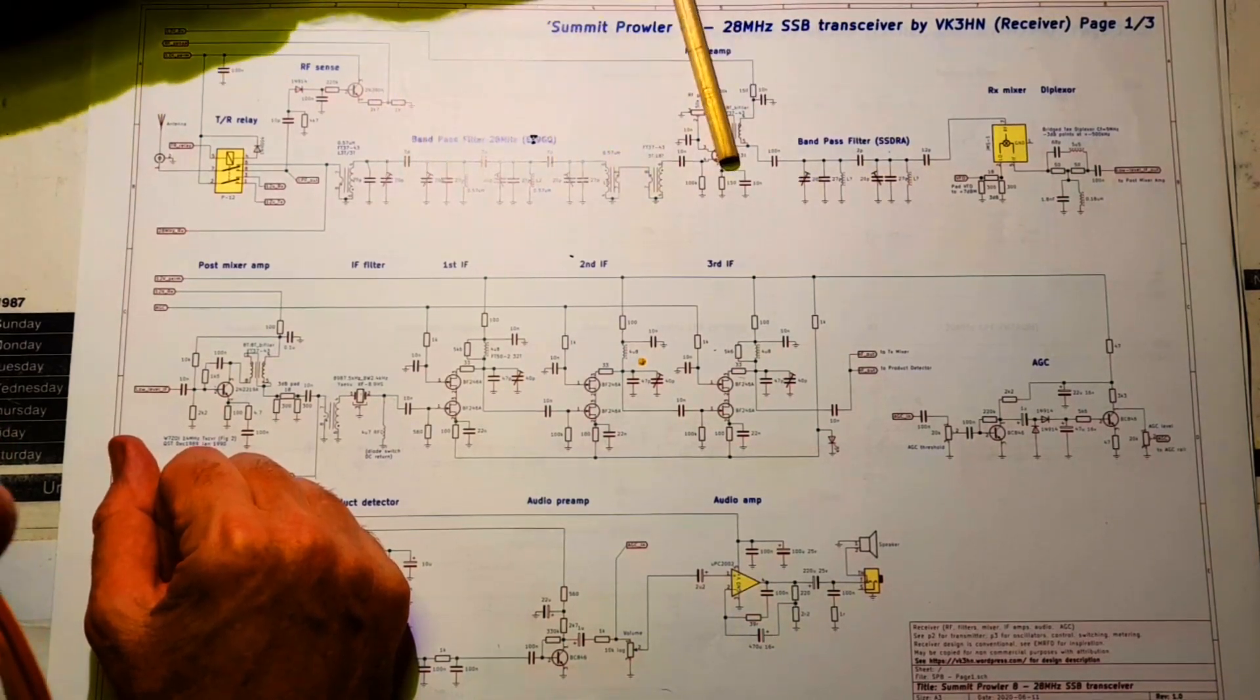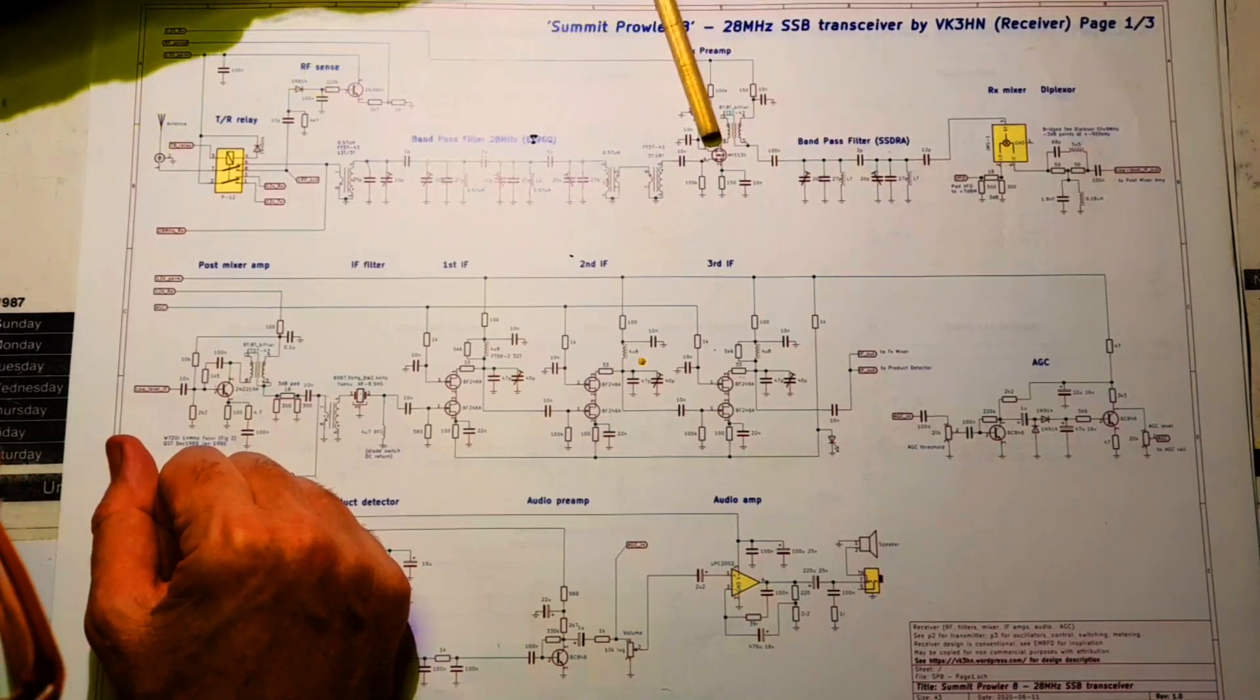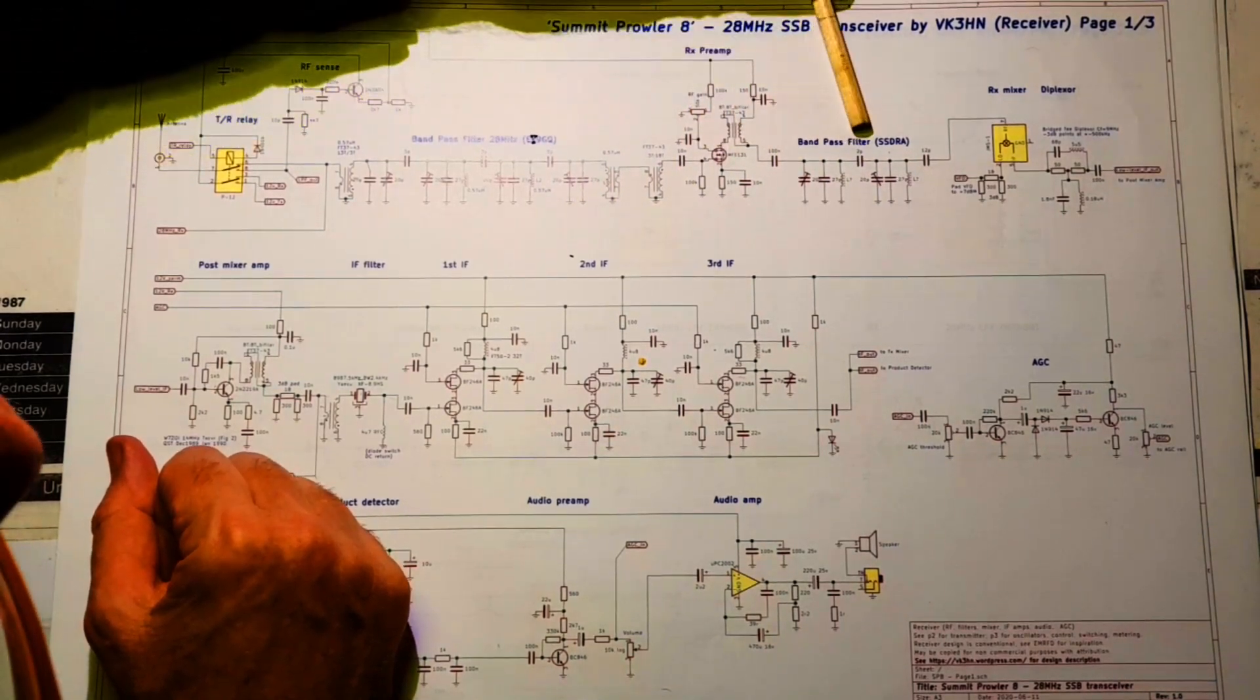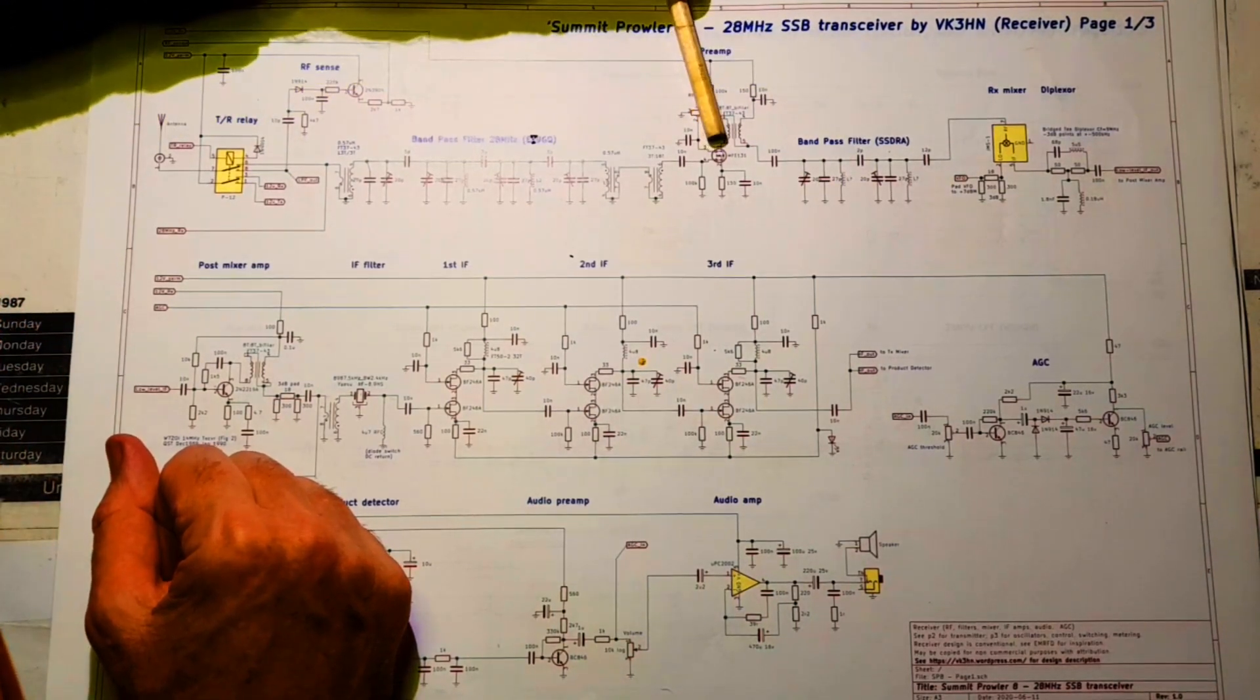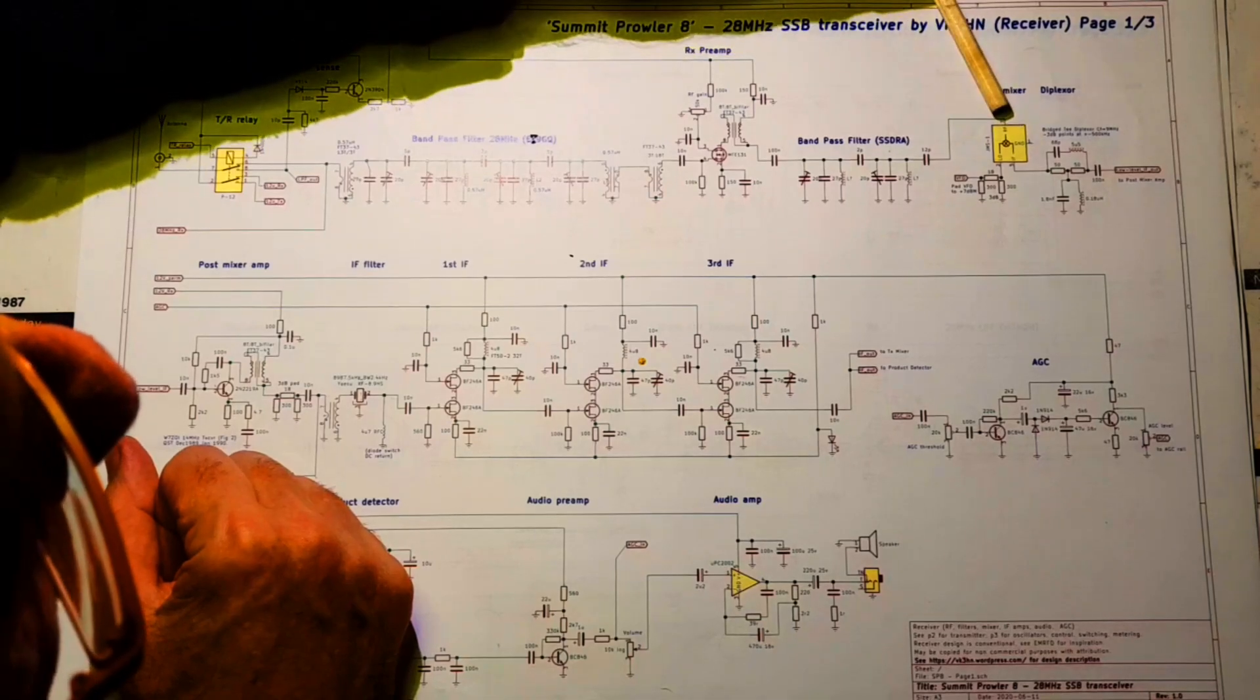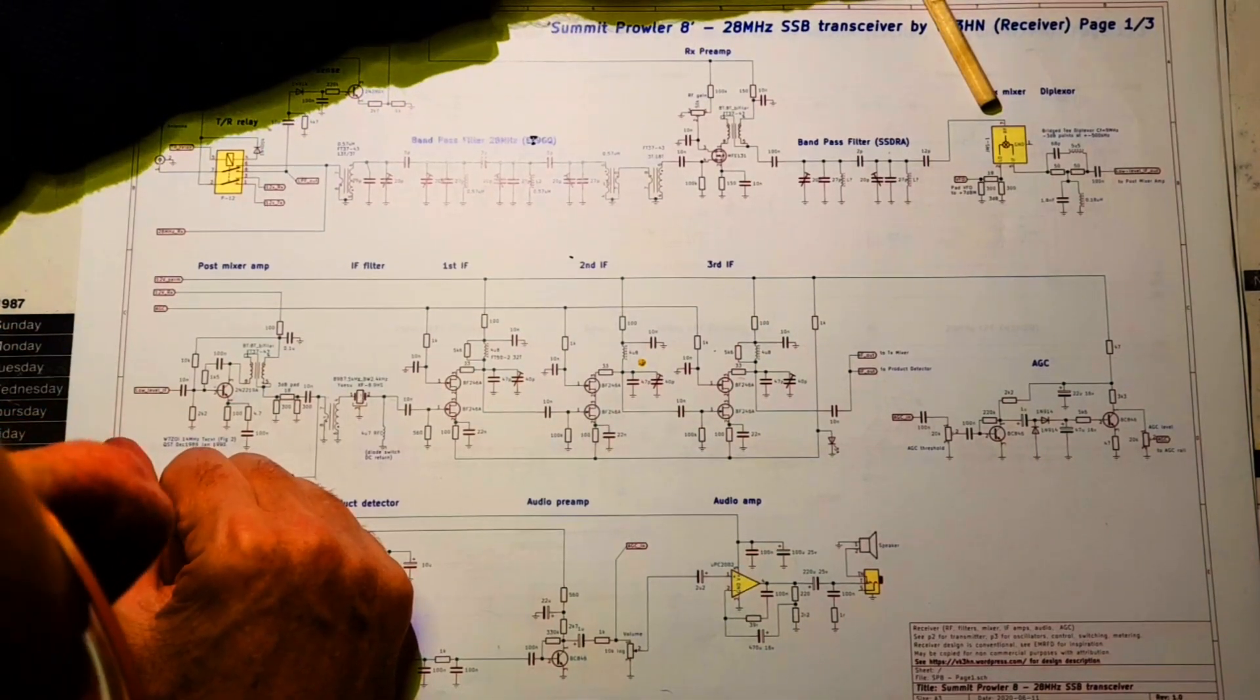28MHz in, bandpass filters on the input and the output of the RF amplifier. And this has the advantage that you clean off any unwanted products generated by the RF stage. Then into a receive mixer which is a JMS1 double balanced diode mixer.